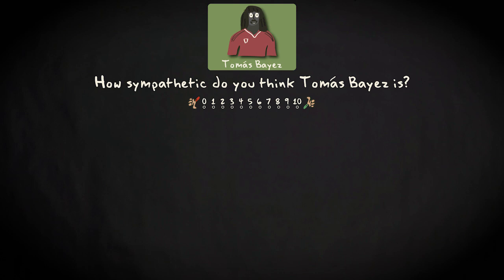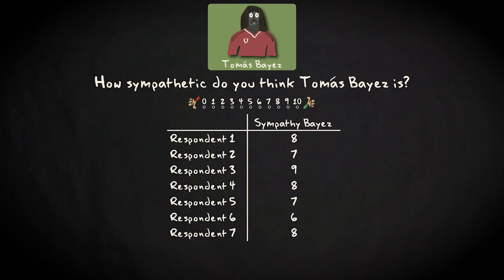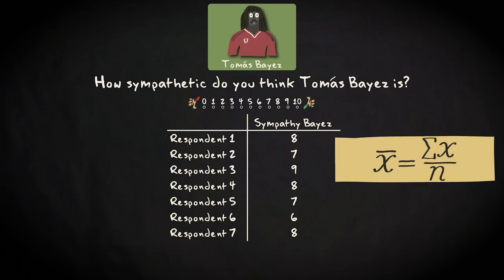To give an example, let's again use the study on Thomas Bayes. This was the data matrix. The formula tells us to first sum all the values. That's 6 plus 7 plus 7 plus 8 plus 8 plus 8 plus 9. That equals 53. We now have resolved this part of the formula. We now have to divide by n. The sample size in this study is 7. So 53 divided by 7 equals 7.6. The mean is 7.6.